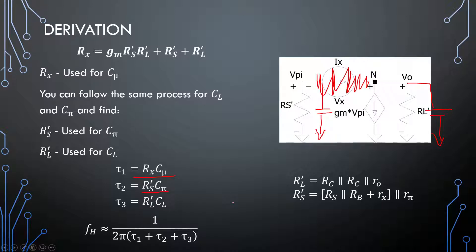You won't typically use OCTC in a common base or common collector configuration — this is mainly for that pesky C_mu capacitor in the common emitter amplifier. You might use it in some other amplifier configurations like cascodes and such, but not at lower levels. This is a good technique to know when you're dealing with multiple transistors in a single circuit or configuration. Thank you for watching and see you again in the next video.